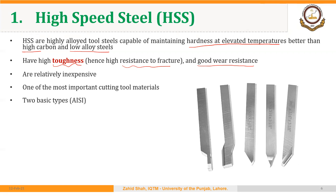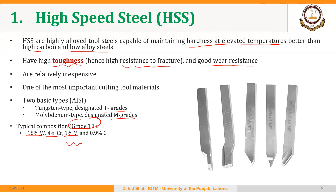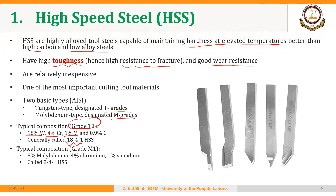As per AISI classification, there are basically two types of HSS: tungsten type, designated as T grades, and molybdenum type, designated as M grades. An example of a T grade is T1, which has 18% tungsten, 4% chromium, and 1% vanadium — also designated as 18-4-1 HSS. An example of an M grade is M1, which has typically 8% molybdenum, 4% chromium, and 1% vanadium — designated as 8-4-1 HSS. T1 HSS was the first grade that was developed.